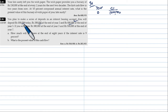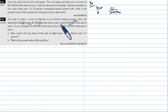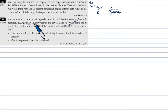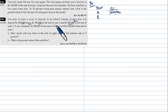Period zero: deposit 1 lakh today. Then 2 lakh at the end of year 2. The timeline shows year 1 beginning at 0, so end of year 2 starts from period 1.